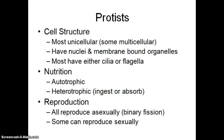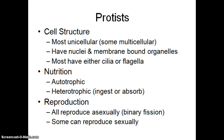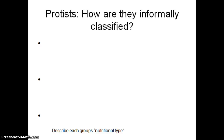Looking at animal-like protists: they need to be eukaryotic, most are unicellular though some examples are multicellular, they have nuclei and membrane-bound organelles. Animal-like protists will have either cilia or flagella for movement. Their nutrition is heterotrophic, and they reproduce asexually, though sometimes sexually. Based on that concept map, take a moment to fill out how we can informally classify protists, then come back.